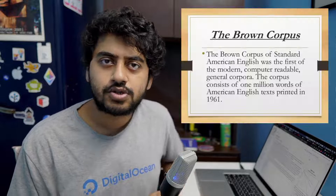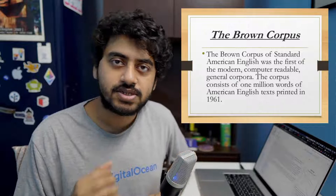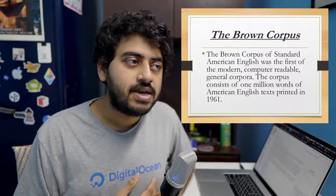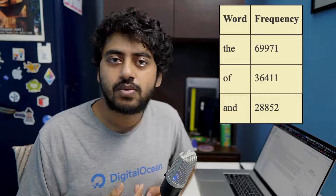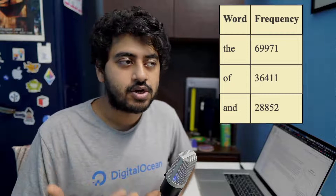There is something called the Brown Corpus — a body of a large number of English language texts. When we apply Zipf's Law on the Brown Corpus, it holds very well. The top three words are 'the', 'of', and 'and'. 'The' occurs twice as many times as 'of', and 'the' also occurs three times as many times as 'and'.